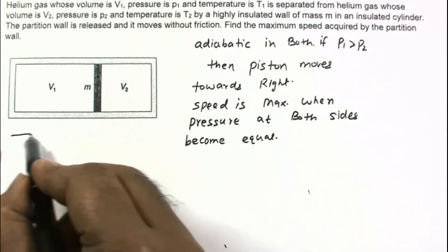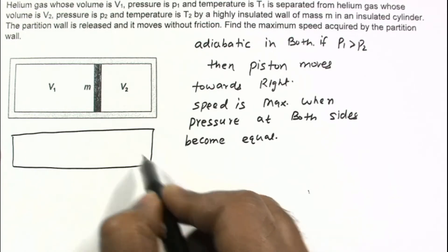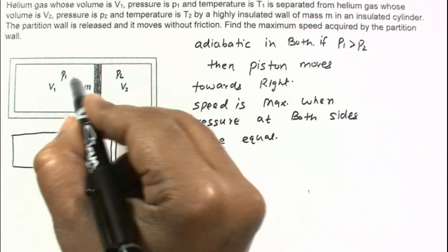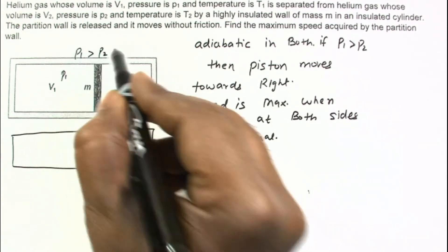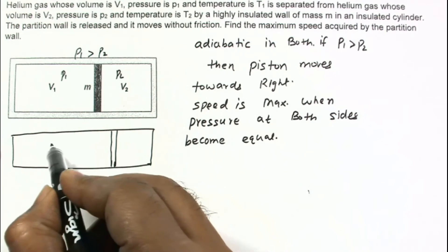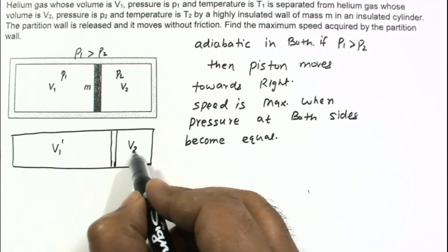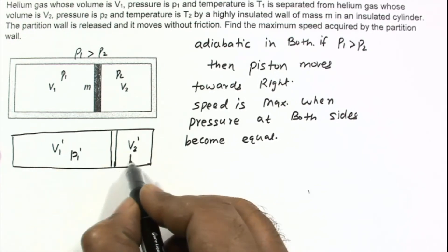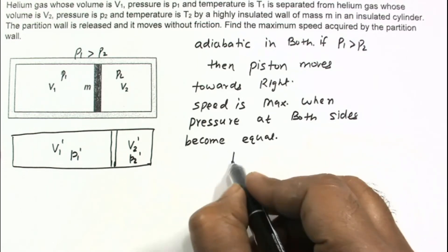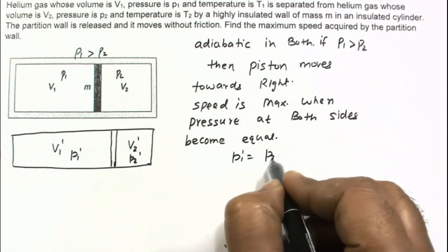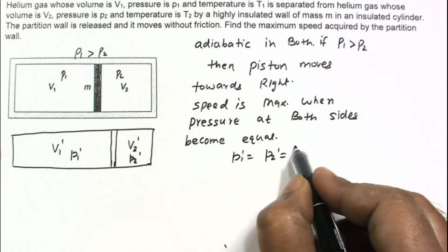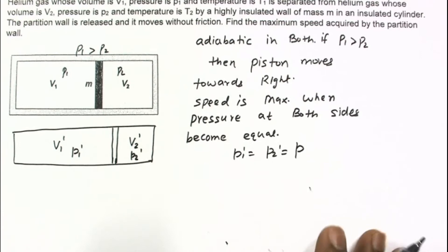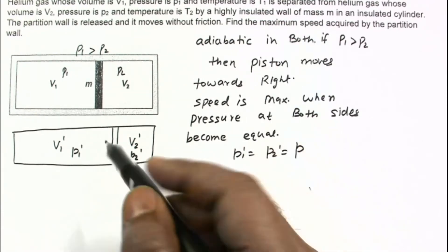Let us draw the diagram when pressures become equal. Suppose the piston has moved; the left volume becomes V1' and the right volume becomes V2'. The pressure on the left is P1' and on the right is P2', and P1' equals P2', which is a common pressure P on both sides.